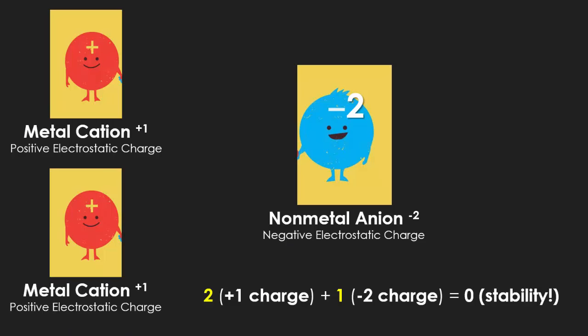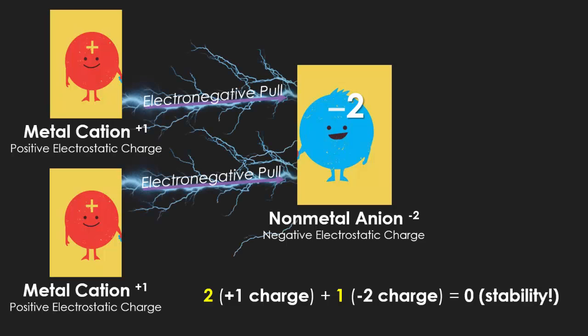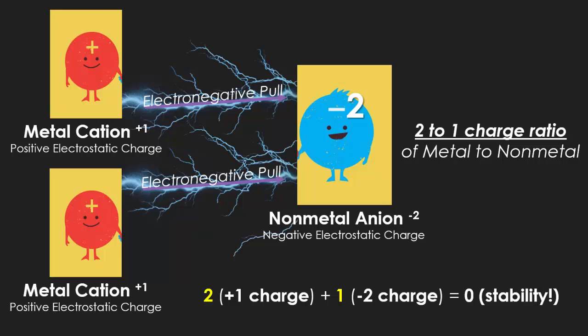Now we're seeing that we have a nonmetal with a negative two charge. Because it has a negative two charge, it requires two of the positive one cations to make a bond. The anion with the stronger electronegative pull is pulling the cations towards itself, but to neutralize, it needs two positive one charges to balance out one negative two charge. Remember, we're talking about binary ionic compounds, which means you can only have two different kinds of elements. If you're working with a metal that only gives away one electron, you continuously add that positive one charge until you balance out the anion. In this situation, we have two metals for every one nonmetal.